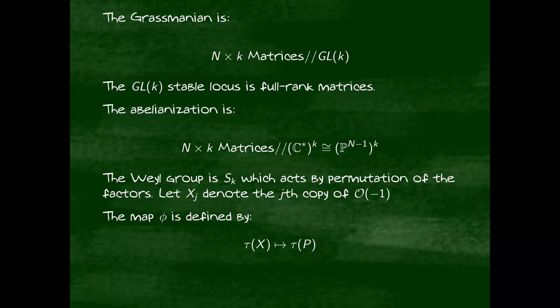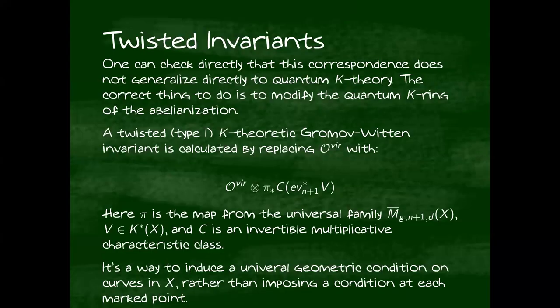But it doesn't. If you naively generalize what you have over there, you can do a couple of checks and see that nothing like this will ever be possible. There is a result for quantum cohomology rings where you modify the map phi, but that also doesn't really work in quantum K-theory.